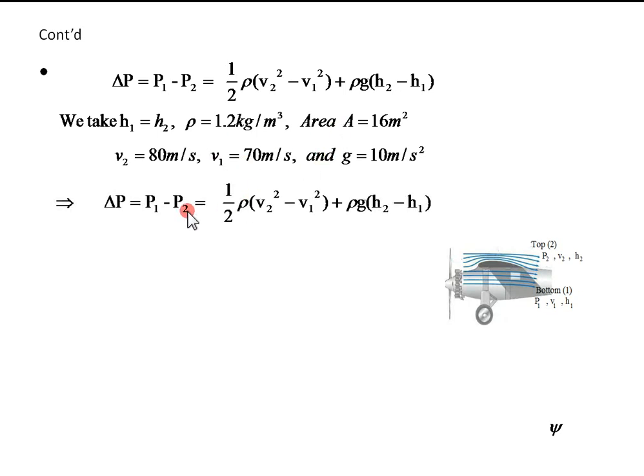We write in this expression H2 minus H1 is neglected, zero, and we get half rho V2 squared minus V1 squared for delta P.